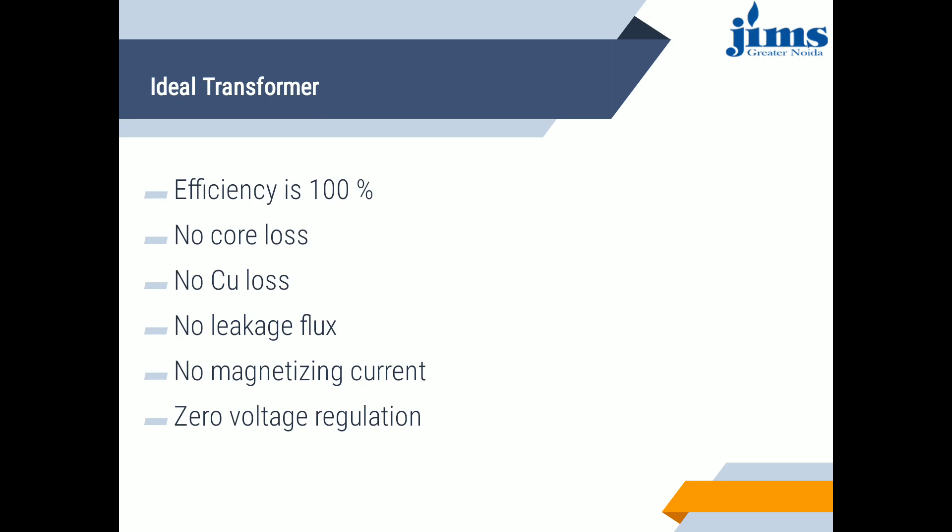No winding resistance means the primary and secondary windings have zero resistance, meaning there is no ohmic power loss and no resistive voltage drop in the ideal transformer. No magnetic leakage means there is no leakage flux and all the flux set up is confined to the core and links both windings.